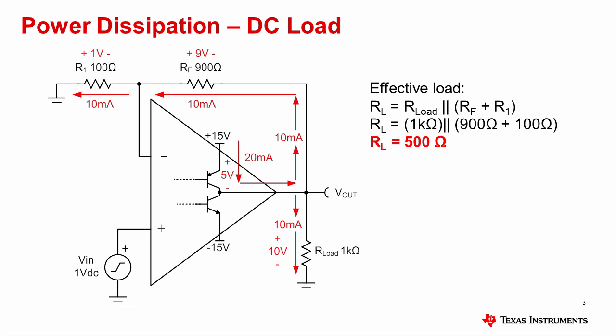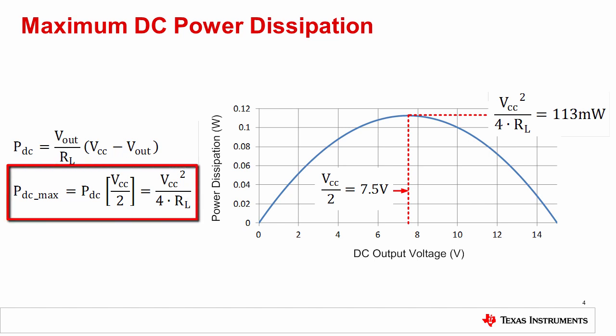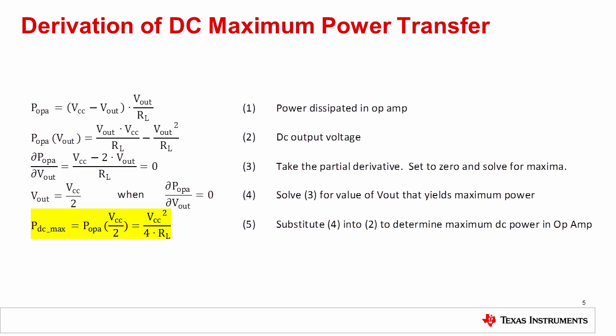The next step is to determine the worst case internal power dissipation. You might guess that this occurs when the output current is maximum, but that is not the case, since maximum current would correspond to 0 volts across the output transistor. The plot on the right shows the internal power dissipation of an op amp versus DC output voltage. Note that the maximum of 113 milliwatts occurs when the output voltage is equal to mid-supply. The relationship for maximum DC power is also given on the left as a function of VCC and load resistance. The relationship for maximum DC power transfer in an op amp is derived using calculus, making use of the fact that a maximum value can be determined by setting a derivative to 0. Understanding the calculus behind the derivation is not critical, but understanding the implications and usage of the result is.